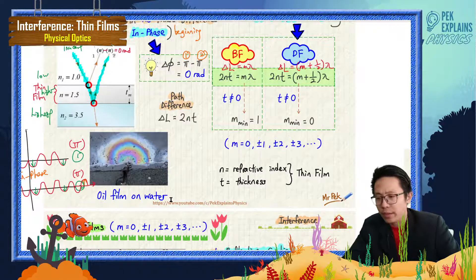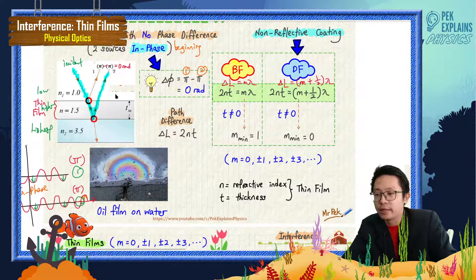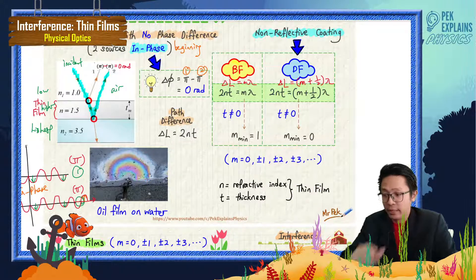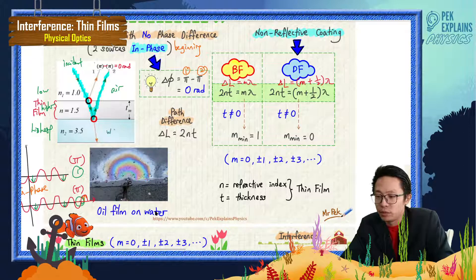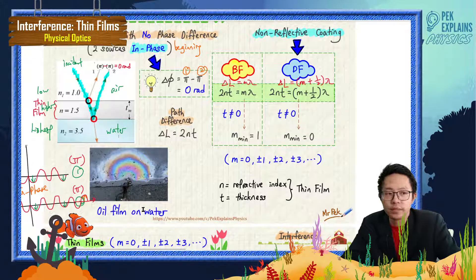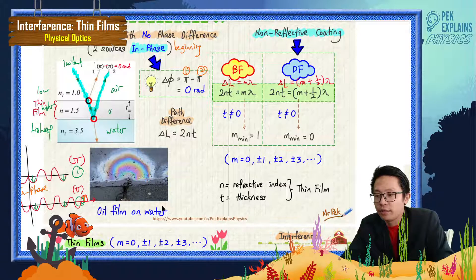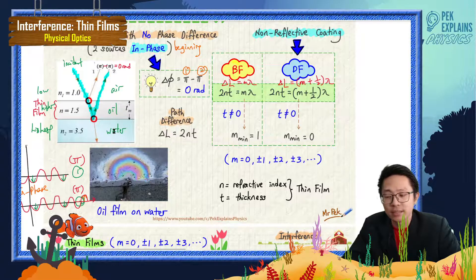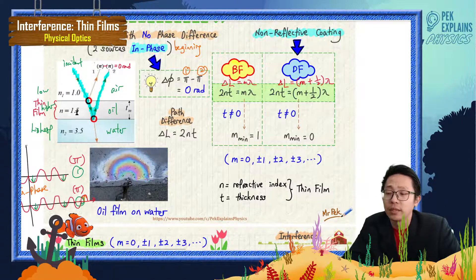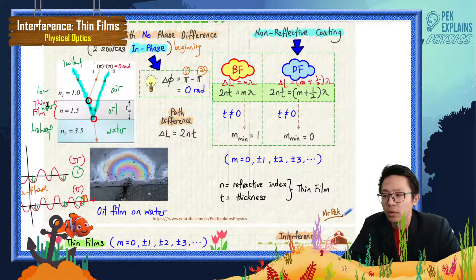For oil film on water, the three layers are: first is air, then the oil layer on top of the water, and water is at the bottom. Oil is on top of the water because oil is less dense than water. The denser medium normally has a higher refractive index, so the less dense medium like oil has a lower refractive index. So air, oil, water follows low, higher, highest refractive index.